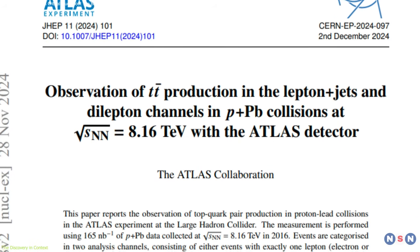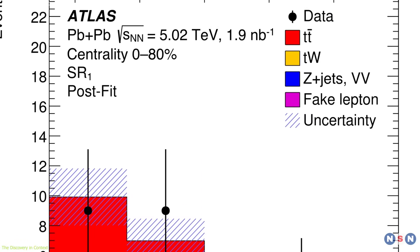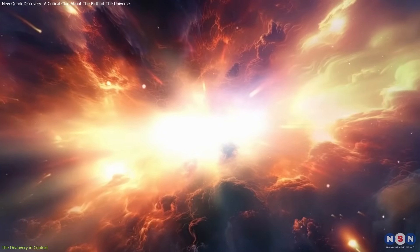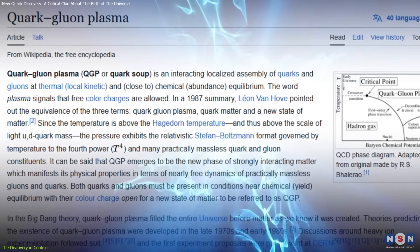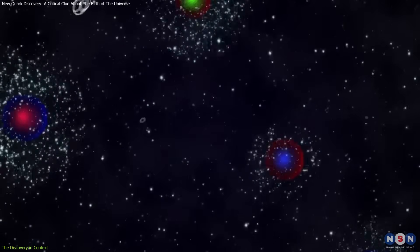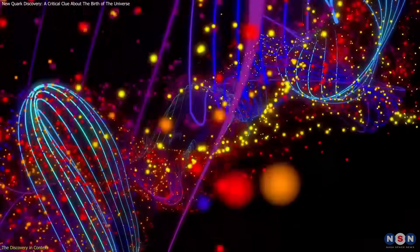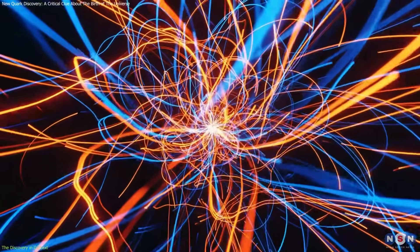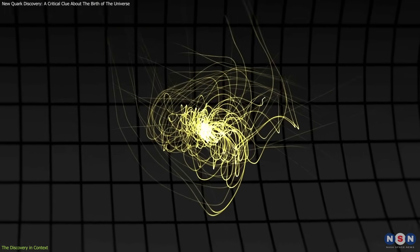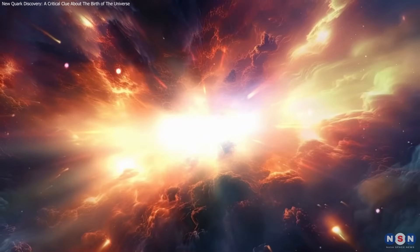While top quark pairs had been seen before in proton-lead collisions, this is the first time they've been observed in lead-lead collisions, where the environment is far more extreme and similar to what existed shortly after the Big Bang. These collisions produce what's known as quark-gluon plasma, a state of matter in which quarks and gluons move freely, unbound from protons or neutrons. Detecting top quarks in such a chaotic environment, filled with countless other particles, is a massive technical achievement. It showcases just how far modern particle physics has come and pushes the boundaries of what we can detect in conditions that mirror the early universe.